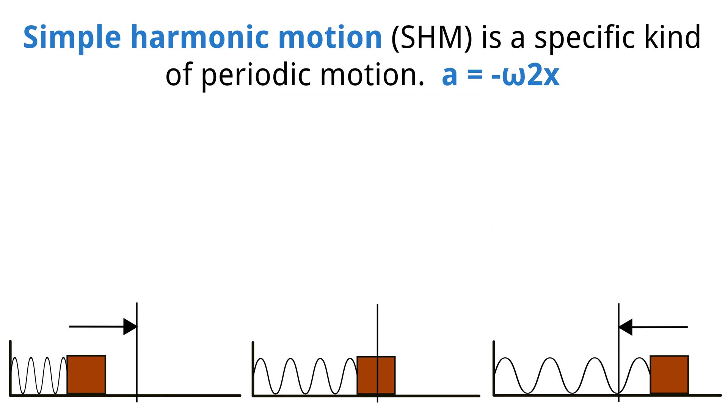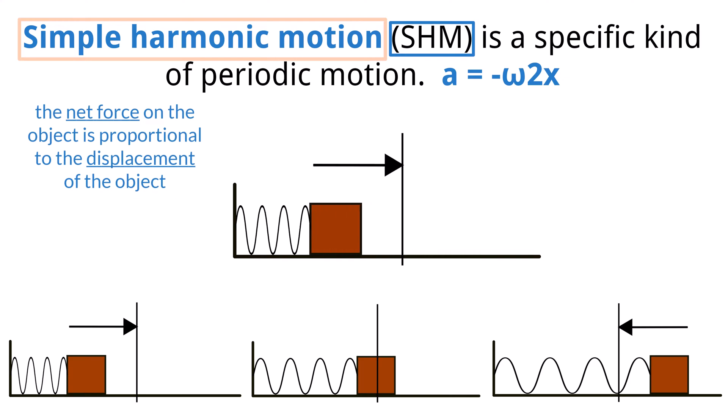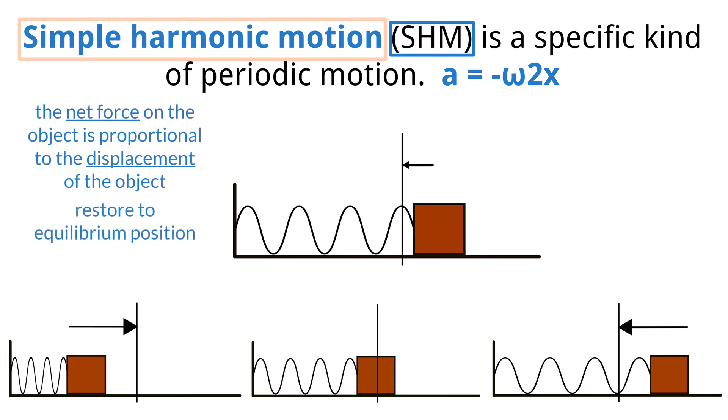The specific kind of periodic motion we are going to be focusing on is called simple harmonic motion, or SHM. When an object is in simple harmonic motion, the net force on the object is proportional to the displacement of the object. This net force is one that is trying to restore the object to an equilibrium position, so it always acts in the opposite direction of the displacement.